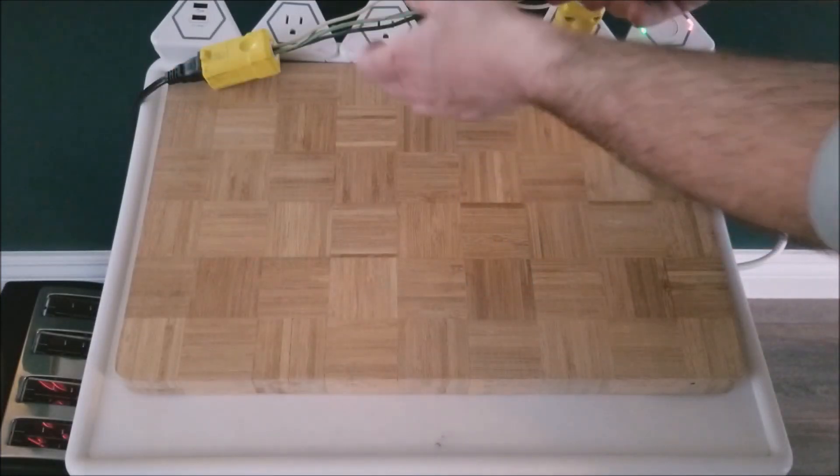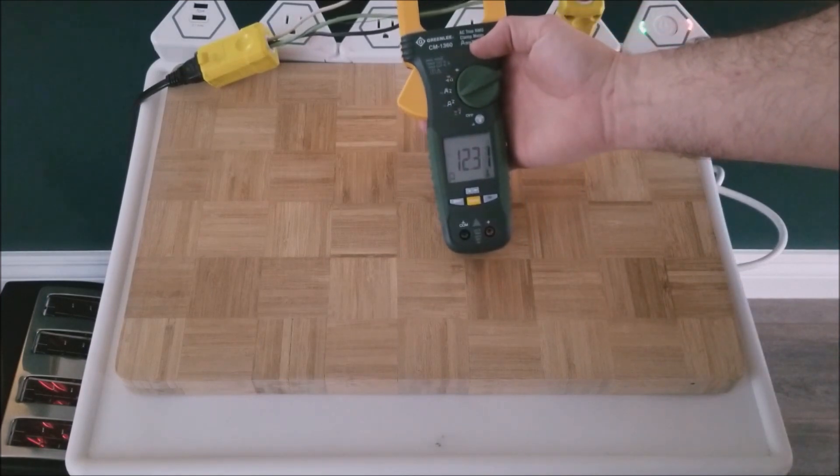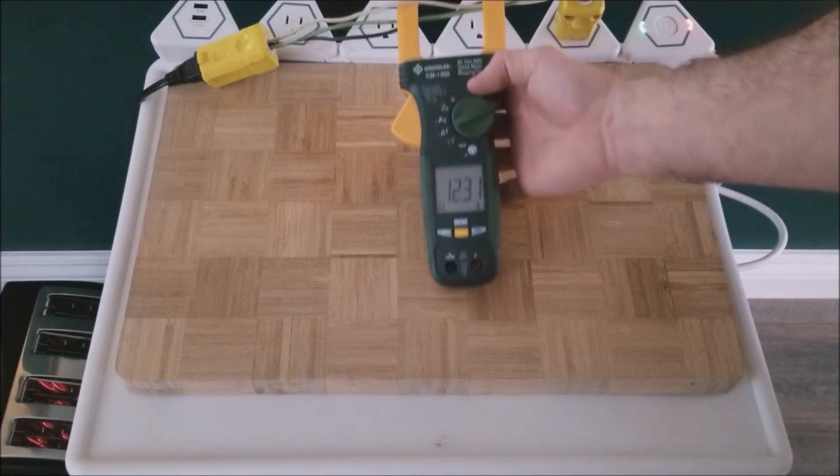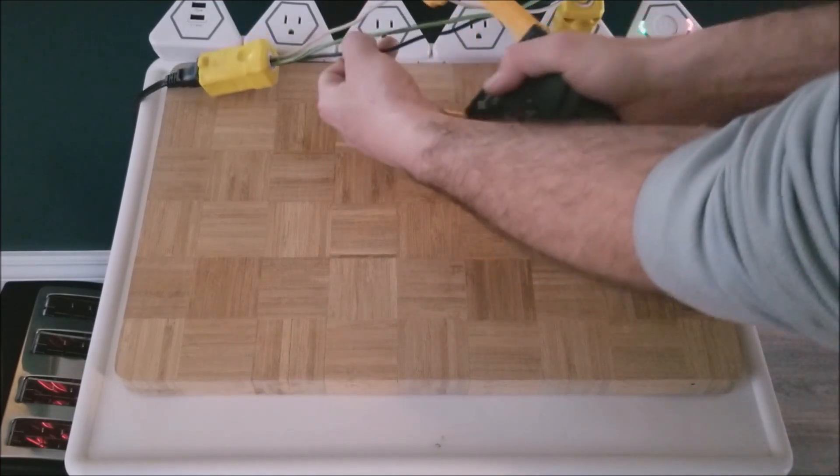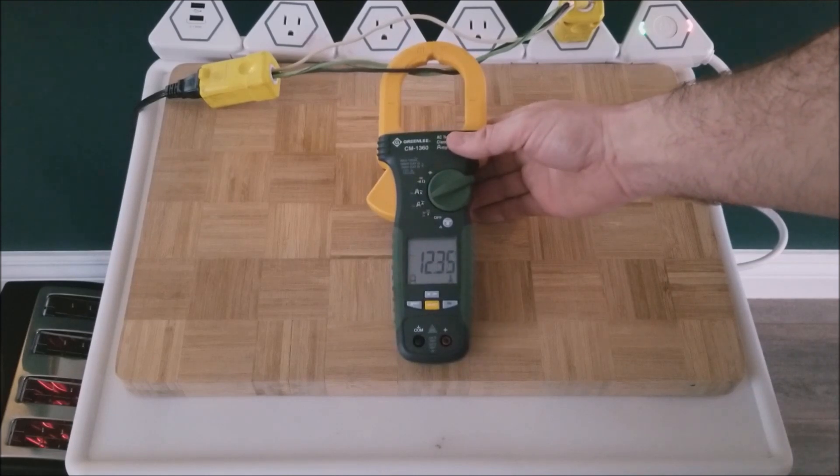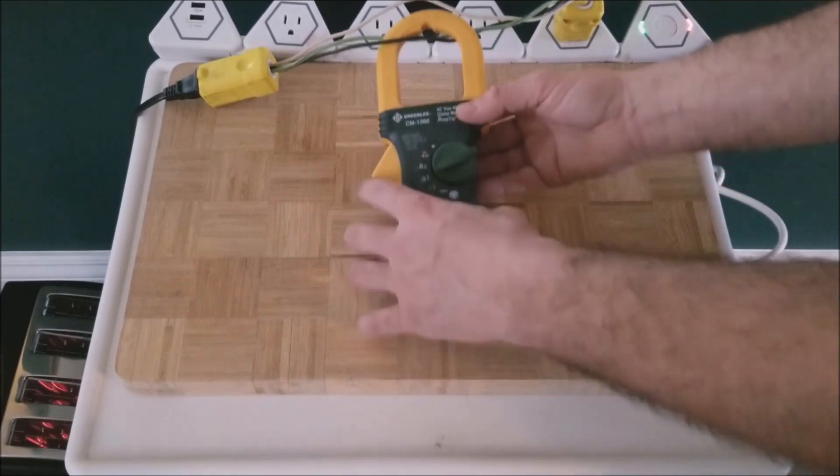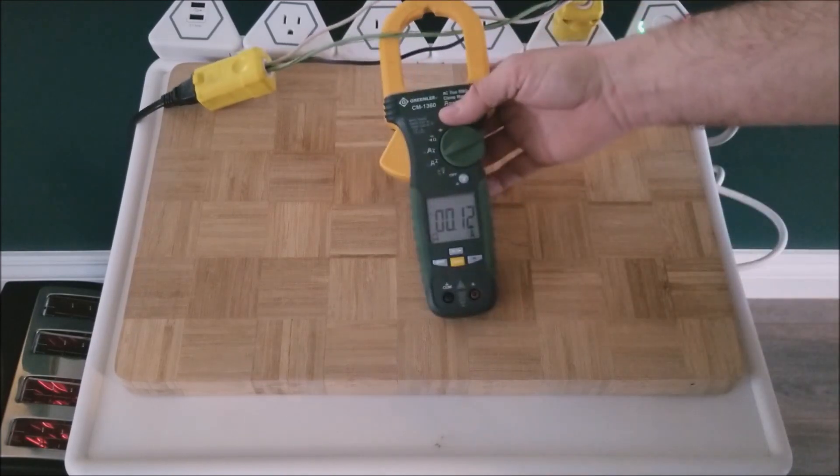So the first thing I'm going to show you is extremely important. Now what I'm clipped onto here isn't actually the live wire, it's the neutral wire. And as you can see, we're still conducting the entire 12 amps, same as the live wire. I'm not going to get into why that is, but it's important that you know the neutral wire is just as dangerous as the live wires.